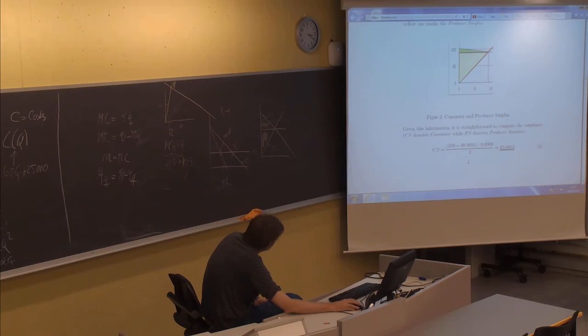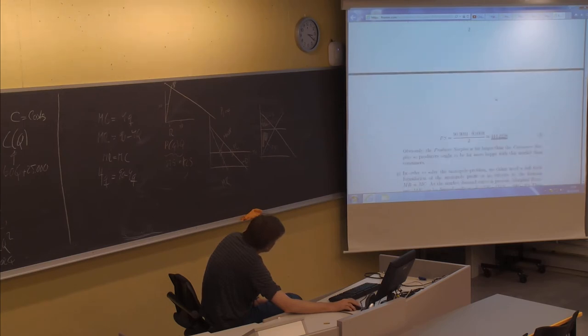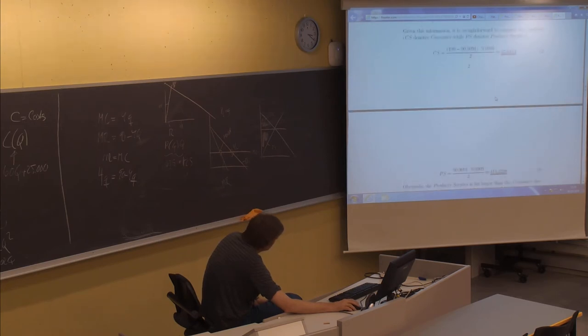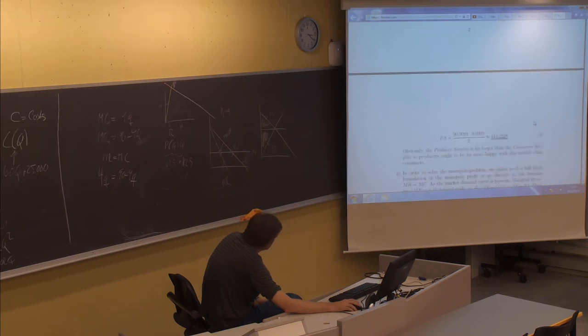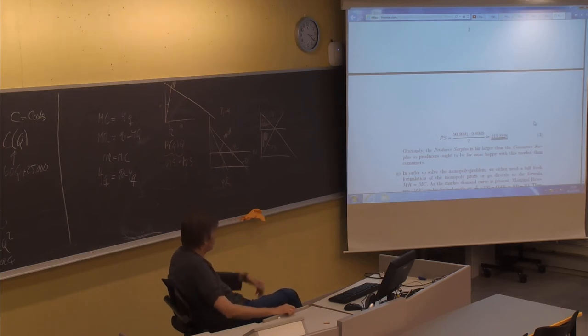On the other hand, the producer surplus, the distance here turns to be 90.91, multiplied by 9.09 divided by 2. That turns out to be 413.2228. Again, bad numbers, but you see from the figure that this one is much smaller than that one. Obviously, the producer surplus is far larger than the consumer surplus. So producers ought to be far more happy with these markets than consumers.